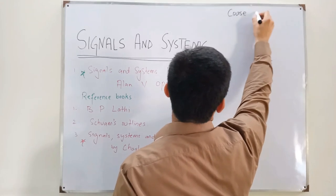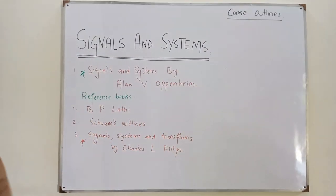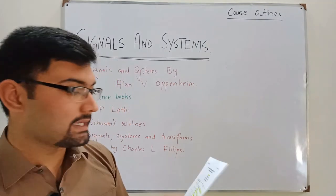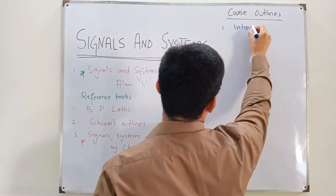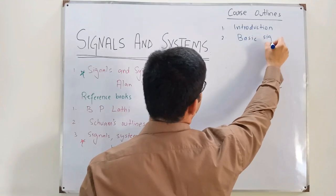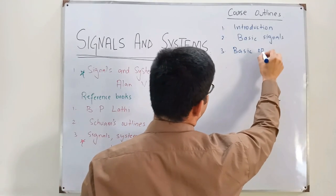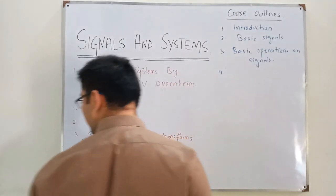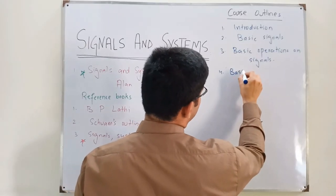I have a copy of the course outlines given by our teacher — this is what our university provides for the sixth semester. The course begins with an introduction to both signals and systems. Then we study basic signals, followed by basic operations on signals. After that we cover basic system properties.